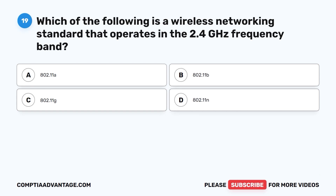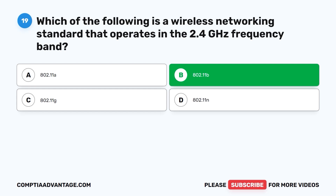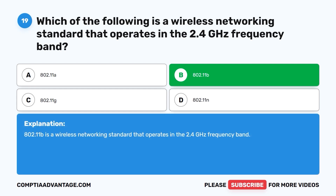Question nineteen: Which of the following is a wireless networking standard that operates at the 2.4 gigahertz frequency band? A. 802.11a. B. 802.11b. C. 802.11g. D. 802.11n. The correct answer is B: 802.11b. 802.11b is a wireless networking standard that operates in the 2.4 gigahertz frequency band.